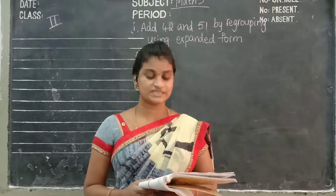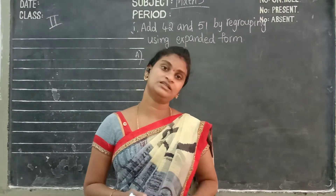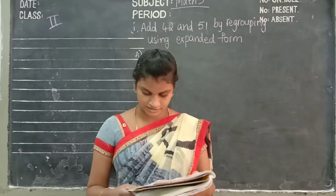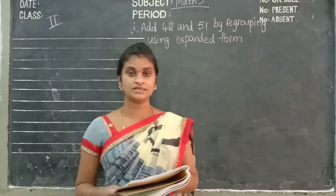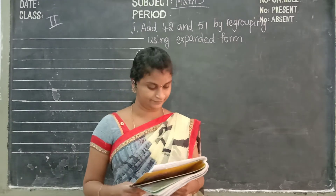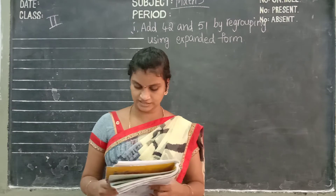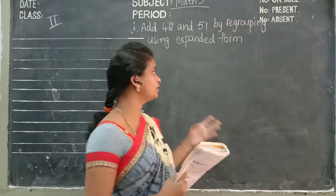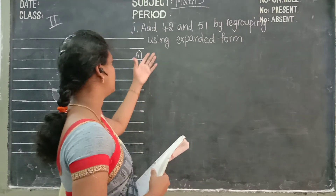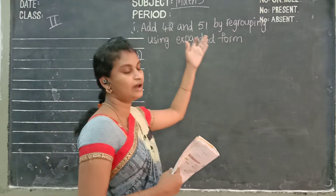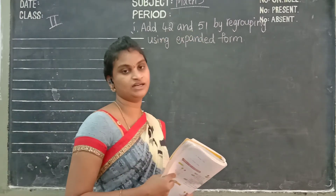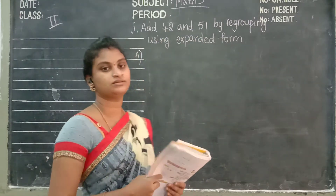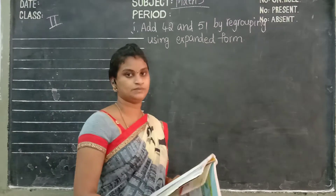Then, page 116, C and D — do this. Next, open to page 117. Do the following addition using the expanded form. First of all, 42 and 51 is given, adding using expanded form.